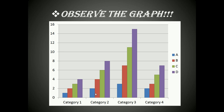In category two, each and every time the bar moves from blue to red, red to green, and green to purple, it is increasing by two units every time. Two units gap here, two units gap here, and two units gap here — it becomes 2, 4, 6, and 8.